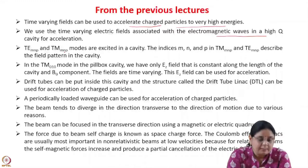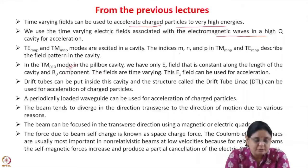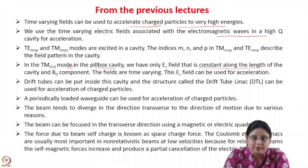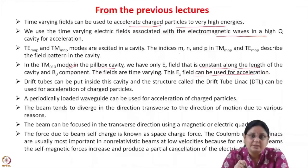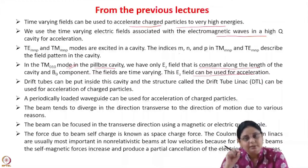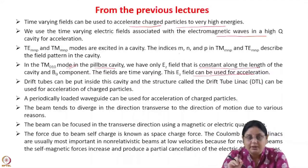In a cavity, TE-MNP and TM-MNP modes are excited; the indices M, N, and P describe the field pattern in the cavity. We discussed in detail the TM-010 mode in the pillbox cavity, where we have only the Ez field that is constant along the length and the B-theta field. This Ez field varies sinusoidally with time and can be used for acceleration. We can put drift tubes inside the pillbox cavity — this structure is known as a drift tube linac — where acceleration takes place in the gaps between the drift tubes. Inside the drift tubes, the fields cannot penetrate and the beam is shielded.